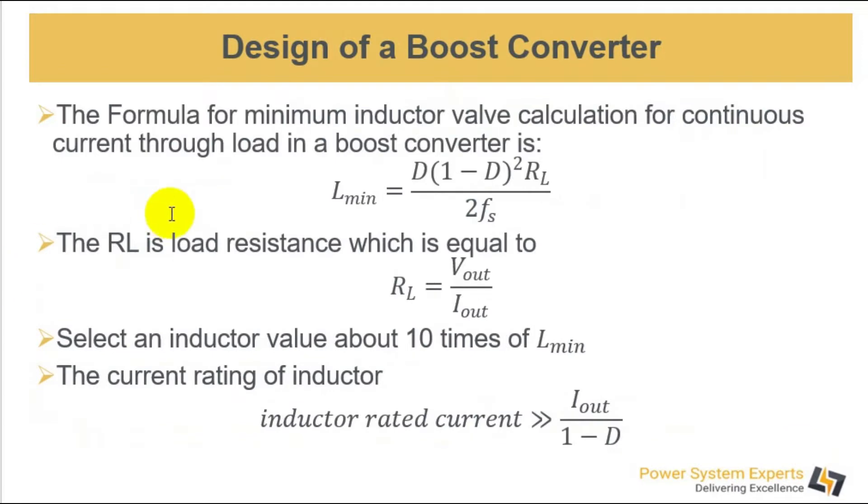Moving towards design of a boost converter. This is the formula for calculation of inductor for continuous current through the load. And this is the formula for minimum value of inductor. You have to keep the value of inductor greater than this. Normally we can select 10 times, it will be a good choice and it will give very low output ripple voltage.